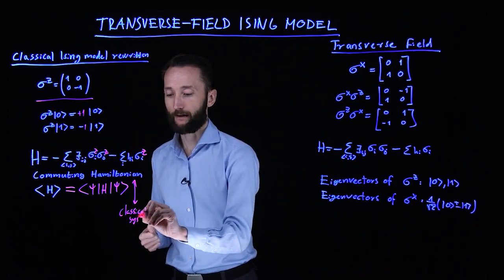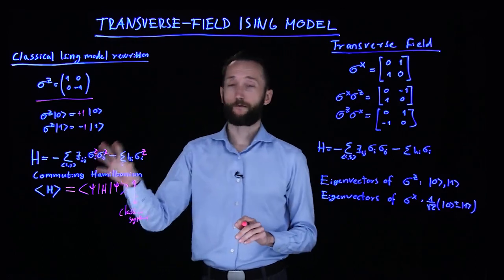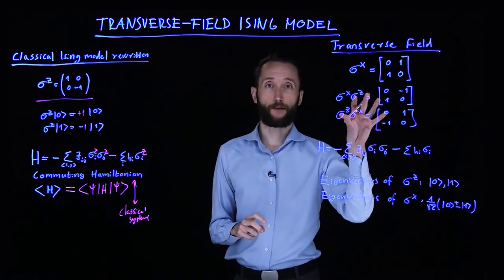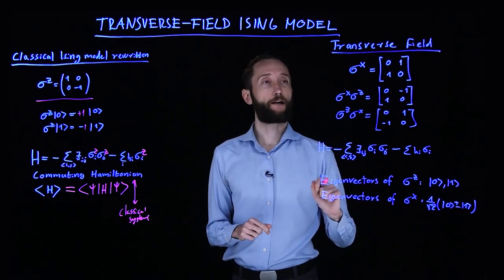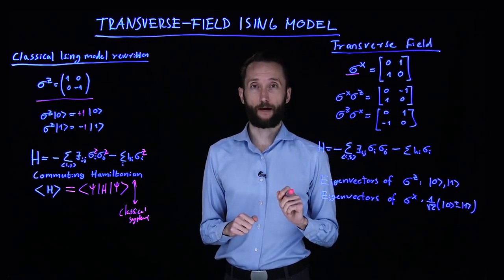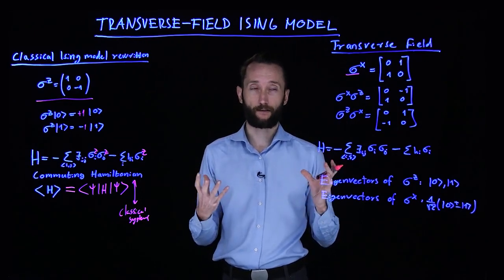To have any quantum mechanical effect, we have to add something more. This is where the transverse field Ising model becomes interesting, because what we are adding is one more type of interaction, a sigma x interaction, a transverse field interaction.